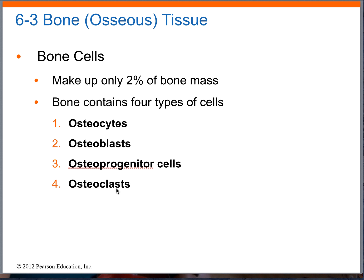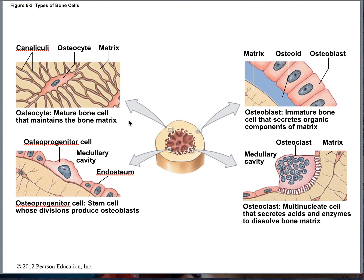Which ones crush? Osteoclasts. Which ones come from white blood cells? Osteoclasts. Which ones build? Osteoblasts. And where do they come from? From stem cells called osteoprogenitor cells. And once they mature and get stuck in lagoons or lacuna, they are called osteocytes. Let's take a look at them.